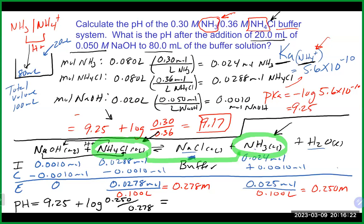Because we still have a buffer, we return to Henderson-Hasselbalch with our new numbers. pH = 9.25 + log([NH₃]/[NH₄⁺]) = 9.25 + log(0.25/0.278). Calculating that gives pH ≈ 9.20. The buffer worked — it started at 9.17, we added base, and it went up only 0.03 units to 9.20. It moved in the correct direction: adding a base should inch the pH upward.